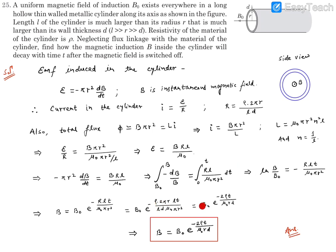After simplification, we find this π and π cancel out, one r cancels out, so it's B₀e^(-2ρt/μ₀rd). L is also getting cancelled out. This could be rewritten as B = B₀e^(-2ρt/μ₀rd).